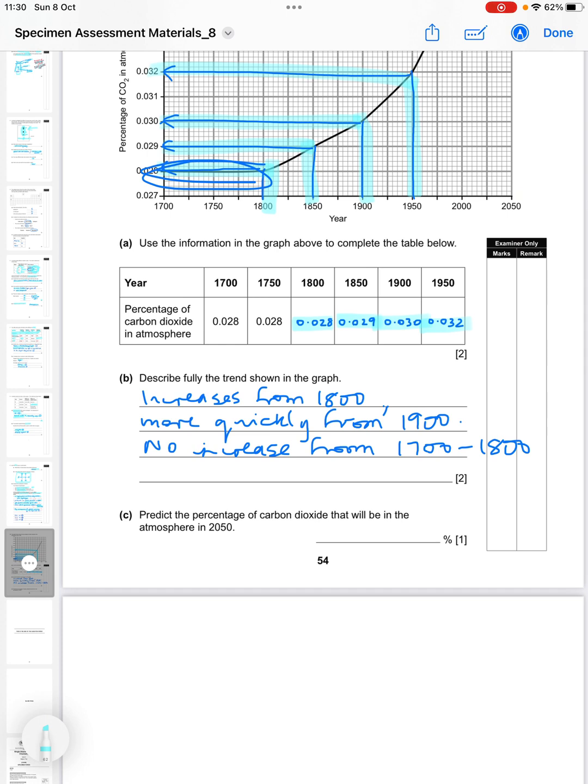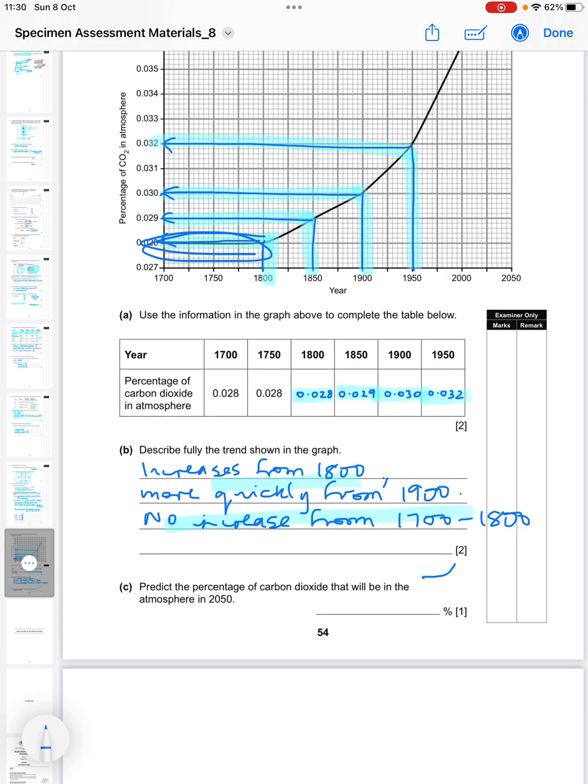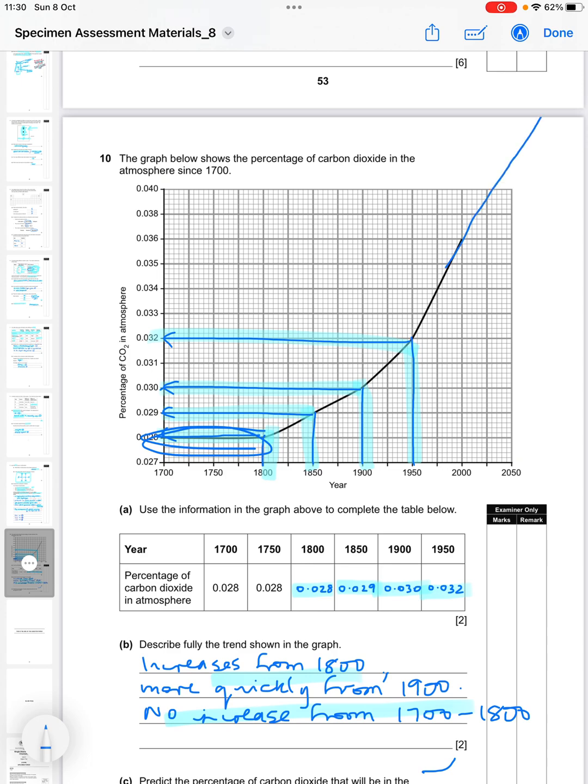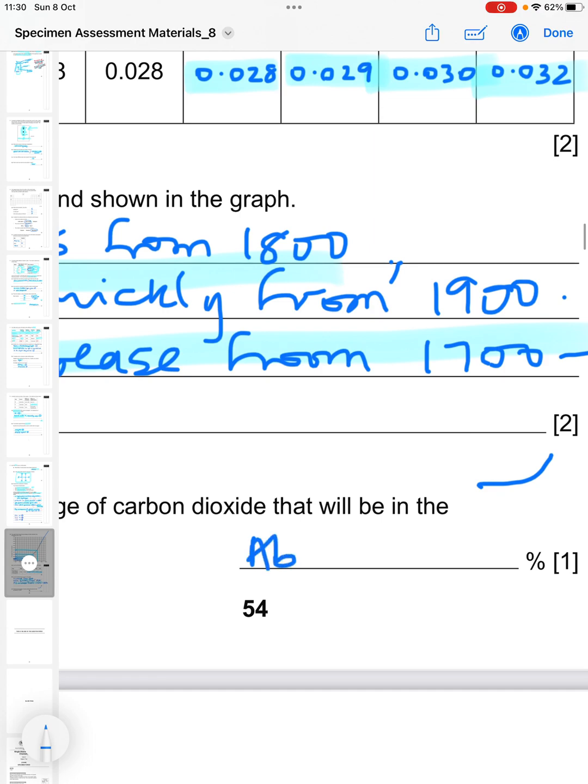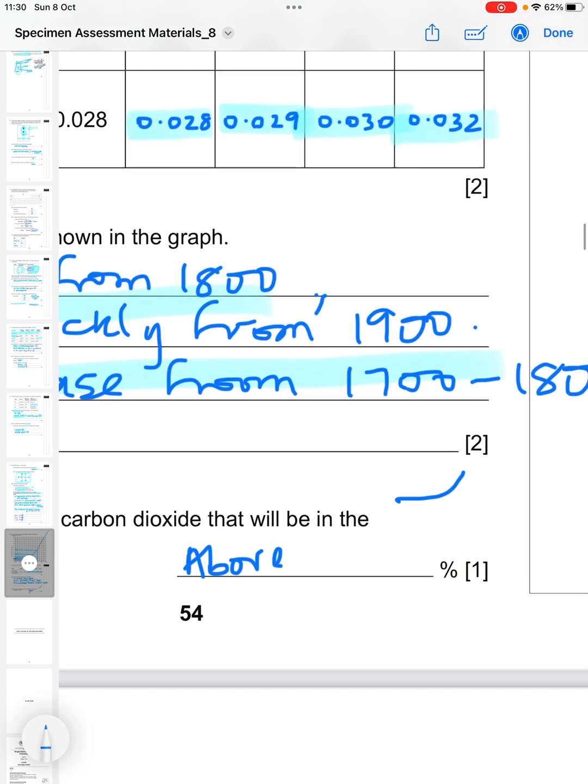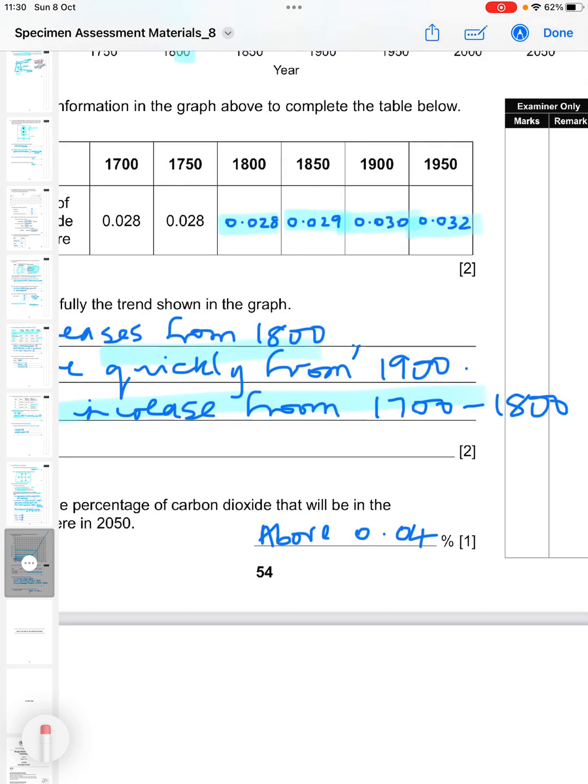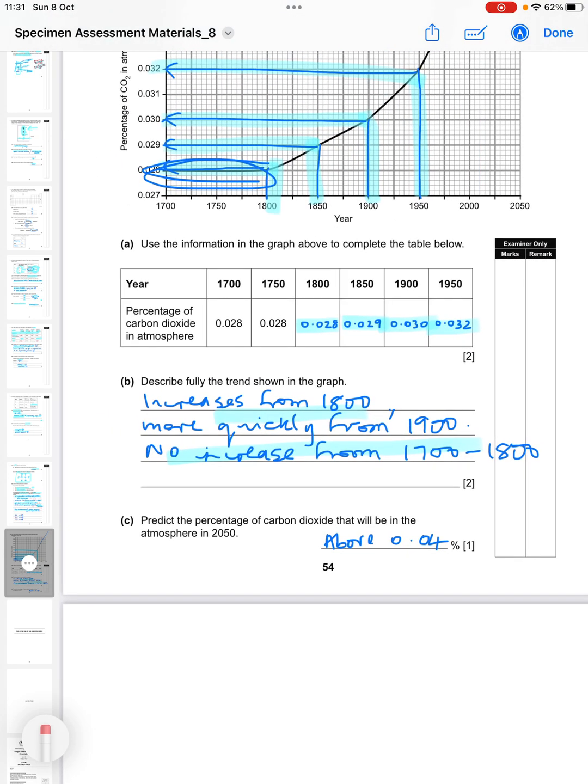Predict the percentage of carbon dioxide that'll be in the atmosphere in 2050. So you're basically trying to draw that graph on up, so anywhere above 0.04. That is all of the foundation tier. I'm going to do the higher tier as well if you'd like to take a look at that too. Thanks for watching.